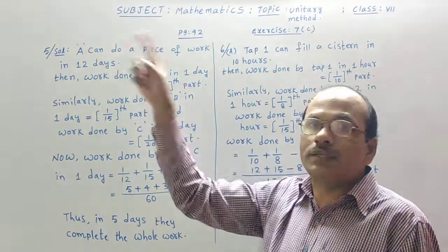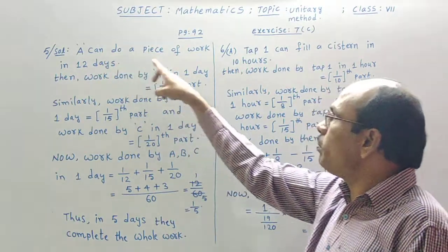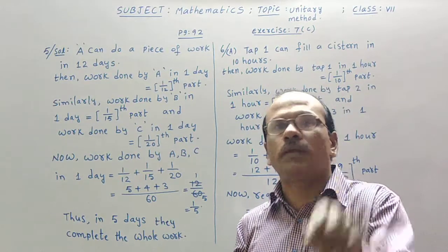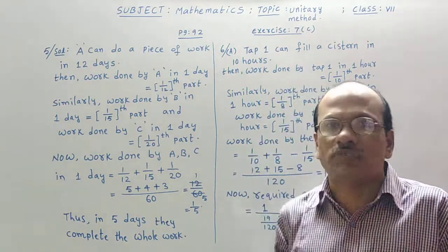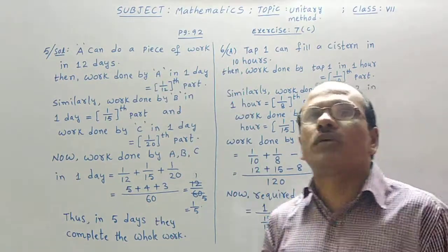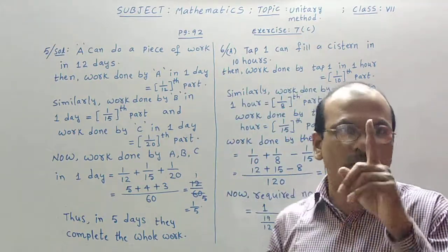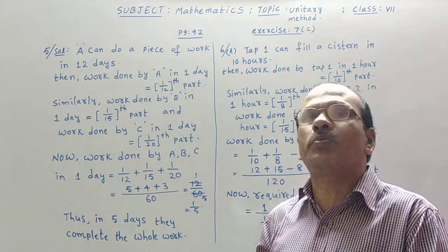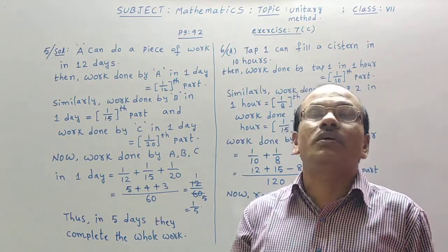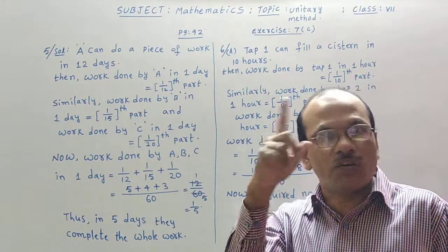Person A. There is a person A. A can do a piece of work in 12 days. The whole work can be finished by person A in 12 days of time. Then work done by person A in one day is 1 by 12th part. We have already discussed how it was. In one day, 1 by 12th part. Two days, 2 by 12th part. Three days, 3 by 12th part. Such a way, 12 days, 12 by 12th part gives you one. One means the whole work.